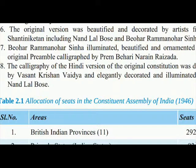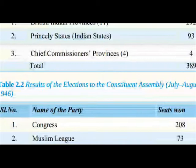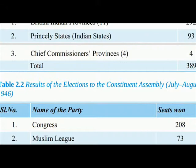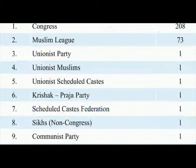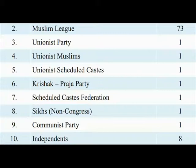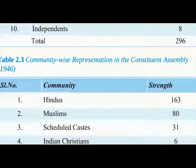Table 2.1 — Allocation of Seats in the Constituent Assembly of India, 1946: British Indian Provinces: 292, Princely States (Indian States): 93, Chief Commissioners' Provinces: 4. Total: 389. Table 2.2 — Results of the Elections to the Constituent Assembly, July–August 1946: Congress: 208, Muslim League: 73, Unionist Party: 1, Unionist Muslims: 1, Unionist Scheduled Castes: 1, Krishak Praja Party: 1, Scheduled Castes Federation: 1, Sikh Non-Congress: 1, Communist Party: 1, Independents: 8. Total: 296.